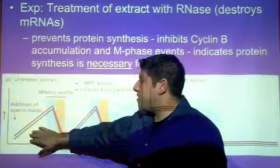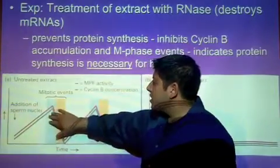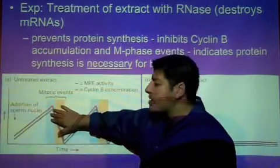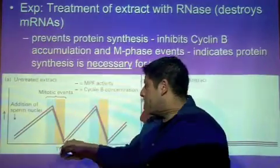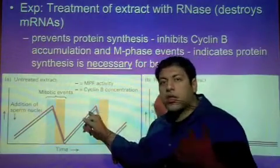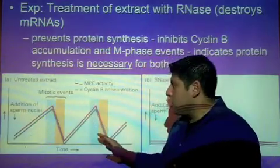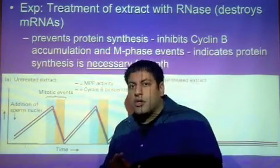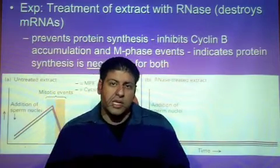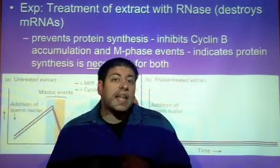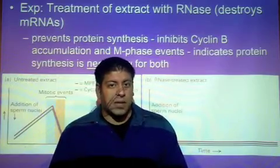We're going to see MPF and cyclin B rising during prophase, metaphase, and falling in the later stages of anaphase and telophase, and then picking up again when we go through another round of mitosis. Now what we're going to do is affect the cyclin B protein and see if that has any effect on the MPF activity.